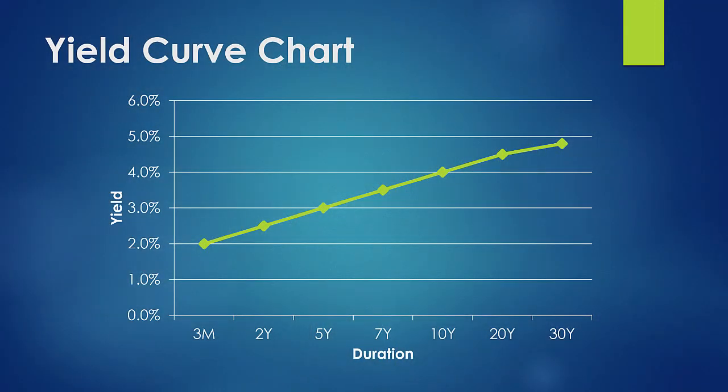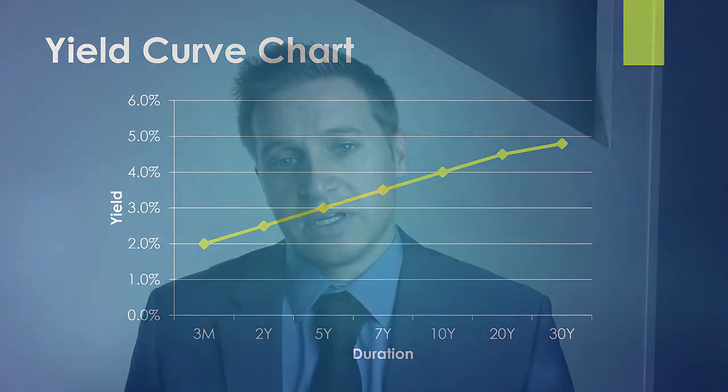I'm going to put up an example, and this is kind of what a typical yield curve looks like. These prices change over time depending on what's going on in the market. Along the bottom of the chart you see different durations — different maturities of bonds. Along the side you're going to see different yields, which represent the return you should expect to receive by purchasing this investment at the current market price.